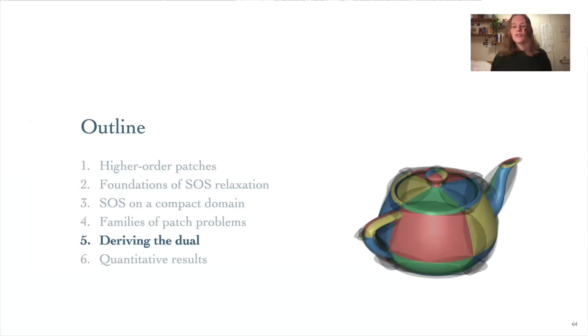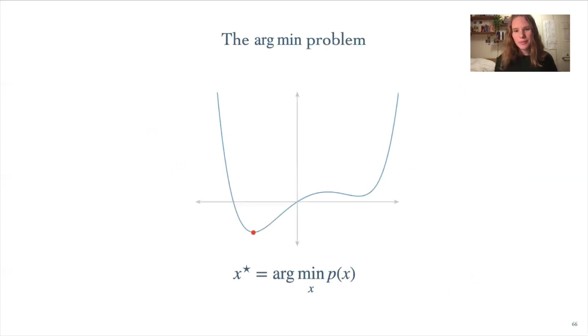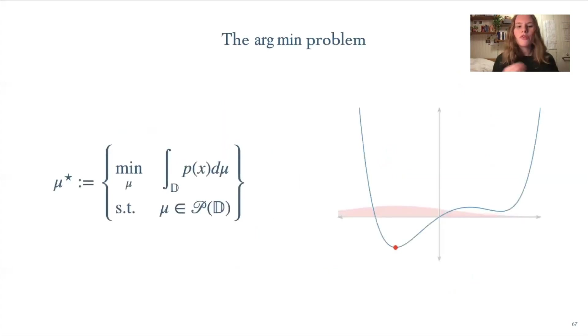So with that, we've seen a general overview of how SOS relaxation can be applied to a whole host of problems. But there's one detail that remains. So far, I've been talking about how to compute the value of these polynomials at their minima. We often also want to compute the location of these minima. So now we'll talk about how to do that. And in doing so, I'll end up deriving the dual of our SOS relaxation. So in our closest point example, we've shown how to find the distance to the closest point. But I actually haven't shown you yet how to obtain the actual point on the patch that gives that minimal distance. This is the argument problem. We now want to find the point x* that minimizes the polynomial p.